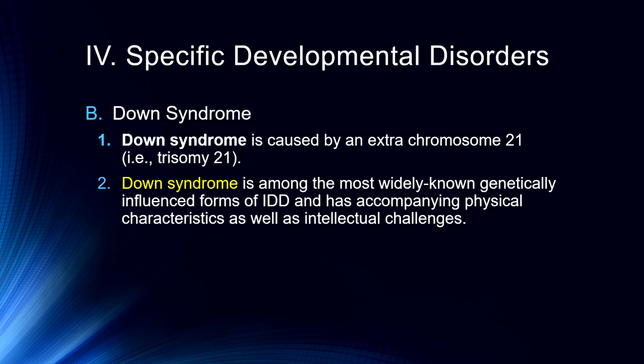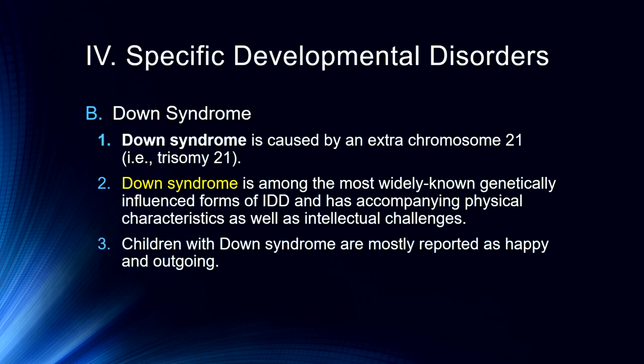Down syndrome is among the most widely known genetically influenced forms of intellectual development disorder. It has accompanying physical characteristics as well as intellectual challenges, with a facial feature commonality across Down syndrome kids. These kids are often very happy and delightful to be around, with just a little bit of a challenge in terms of their intellectual abilities. They are generally able to engage in occupations, support themselves, and take care of themselves.